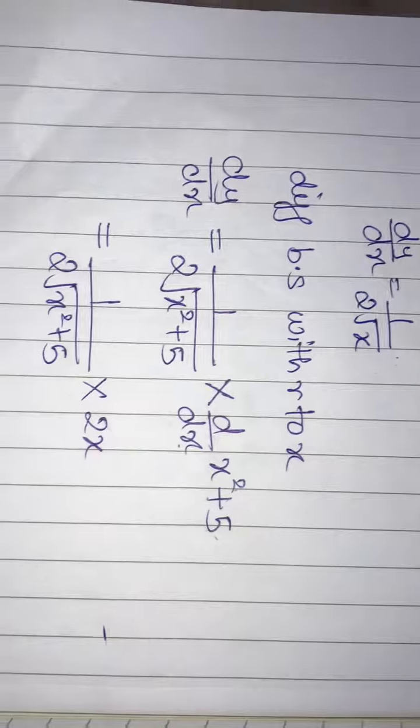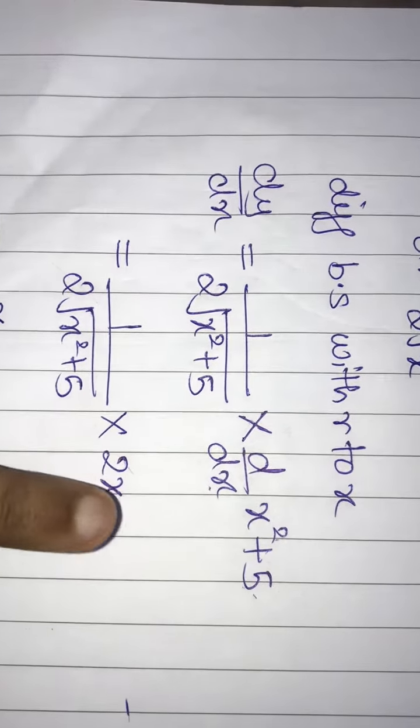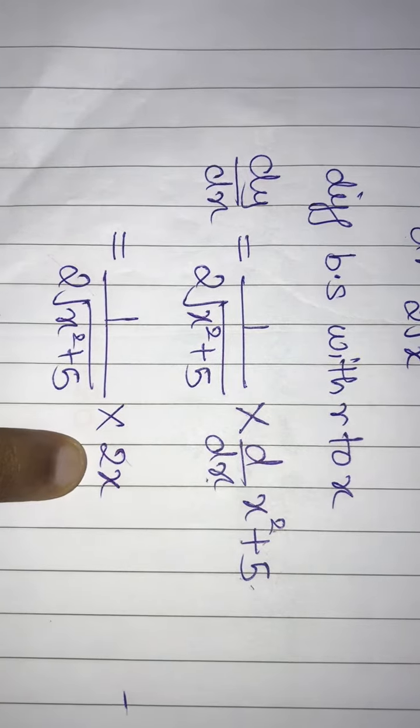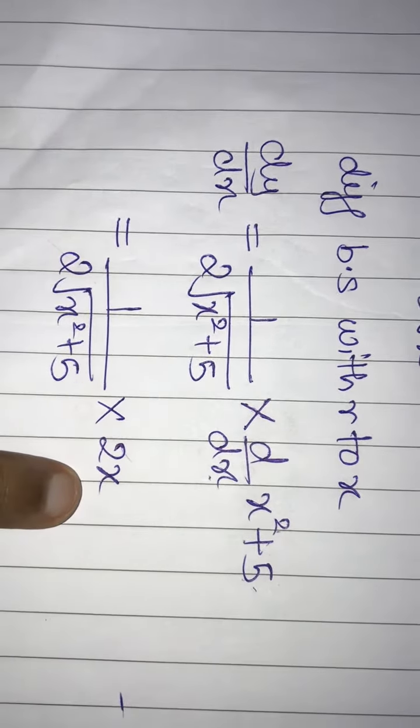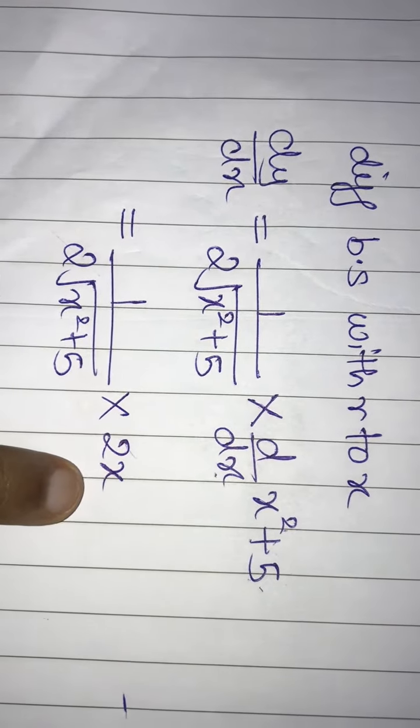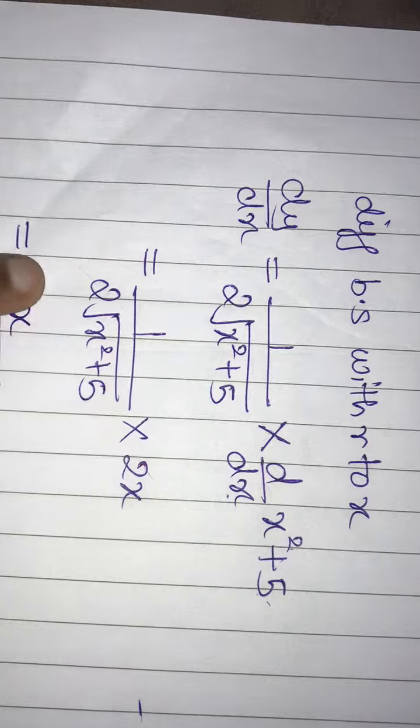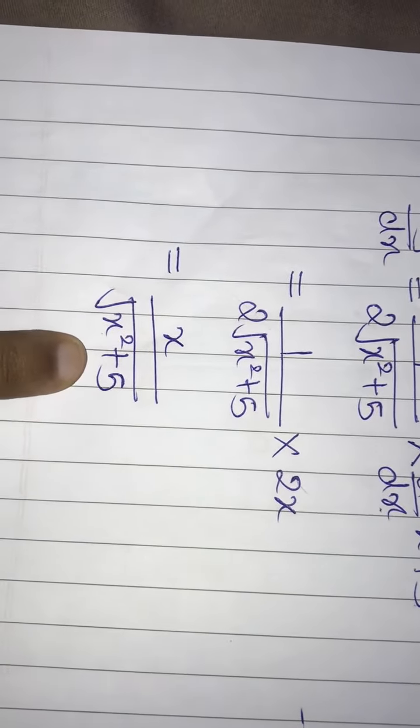Here 5 is constant. I have explained in previous videos. See here, 2 and 2 will get cancelled and your answer will be x upon root of x square plus 5.